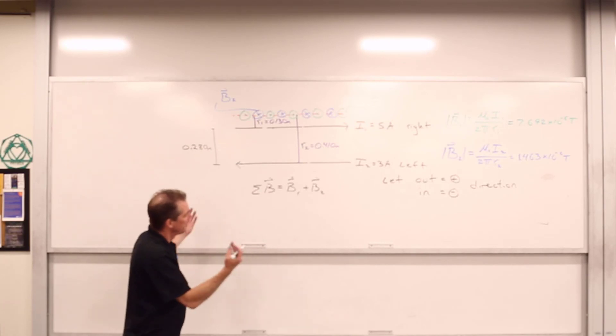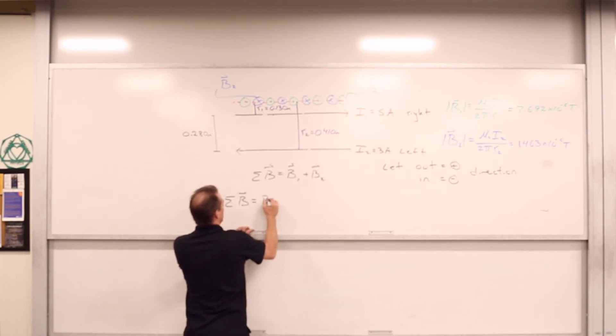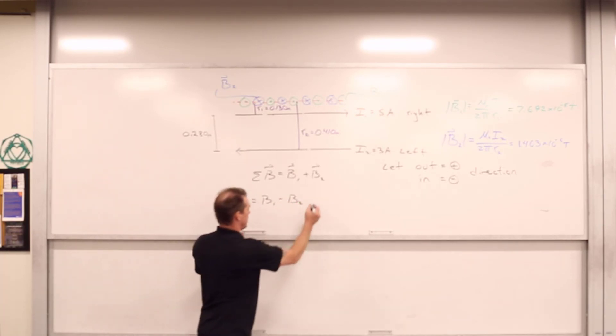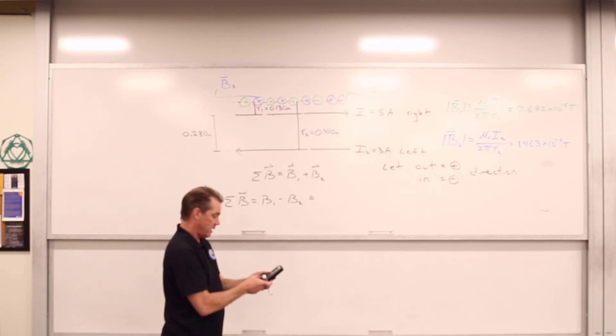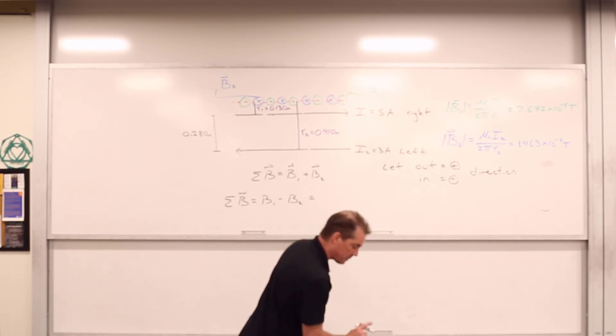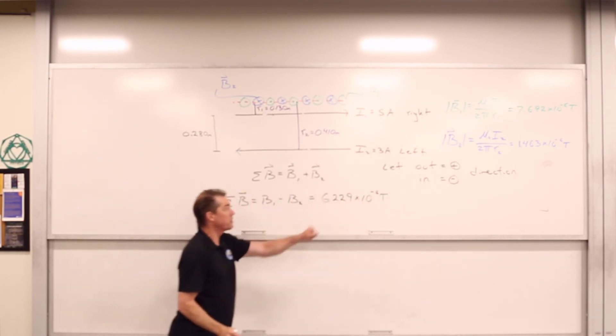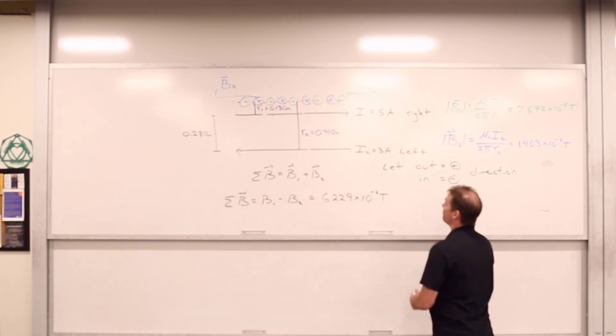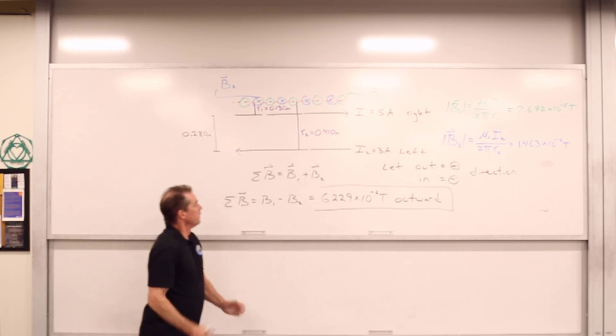Really it's arbitrary. You can pick either one, and the sign tells you in the end what you get. But this is easiest. So we've got ourselves B1 was positive, B2 is negative in terms of their directions associated with their vector quantities. And we've got the difference in their magnitude being 7.692 times 10 to the negative 6 minus 1.463 times 10 to the negative 6 gives us the answer of 6.229 times 10 to the negative 6. It came out to be positive. Positive means outward in the direction of the field that dominates.